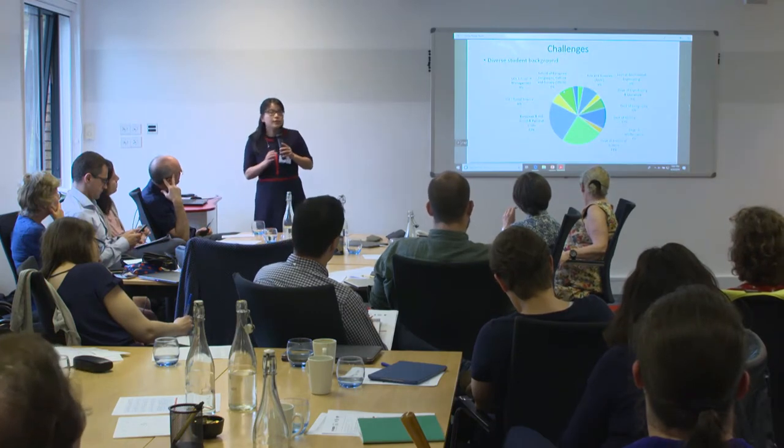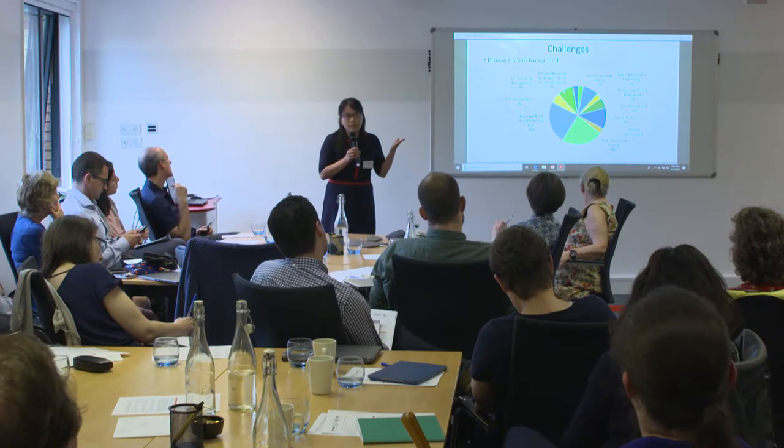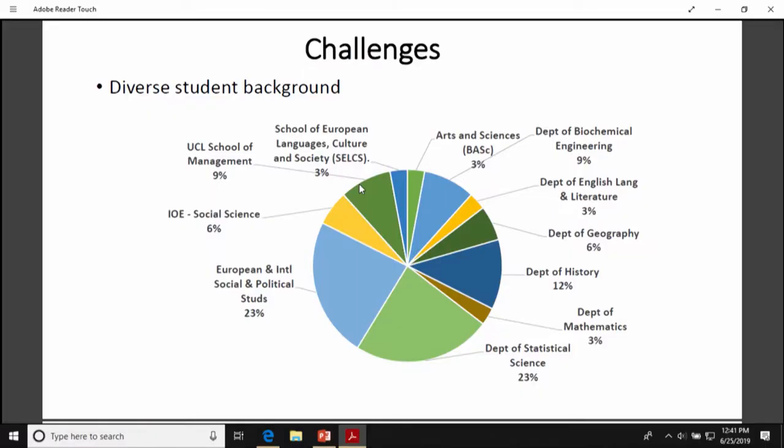There are some challenges. This module is available to all non-economics students from other departments. In 2018-19, students came from more than 10 departments, ranging from mathematics and statistics to history, geography, engineering, and English. Even though prior knowledge of economics is not required, when they arrive, students from the statistics department might have relatively stronger data skills, students from mathematics might have stronger modeling skills, and students from history might have stronger narrative skills. Later I will show actual performance and perceptions regarding the difficulty of the coursework.